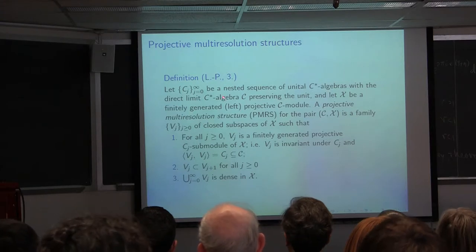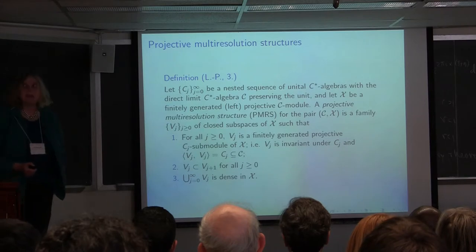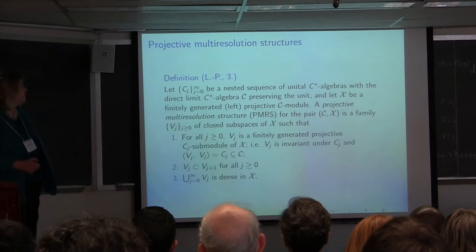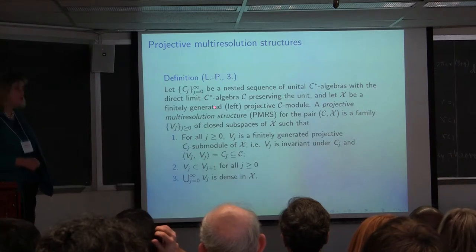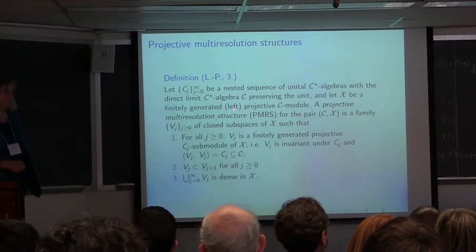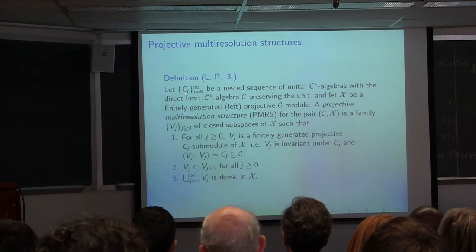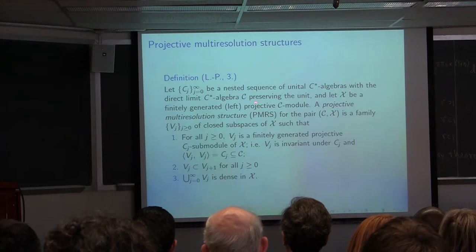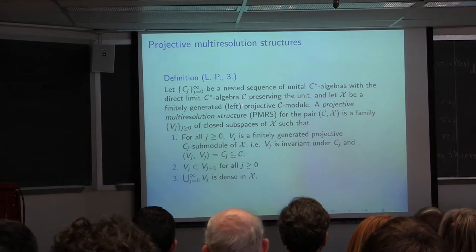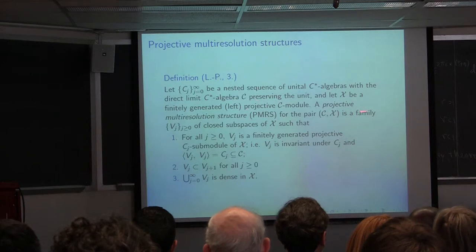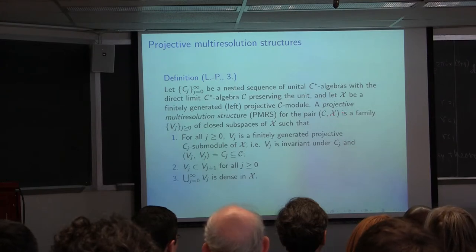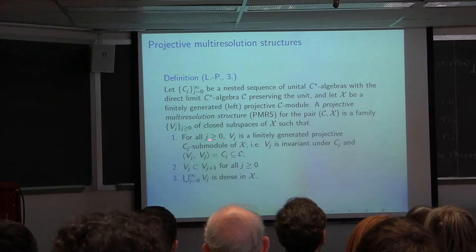With that notion in mind, we ask: is there a way, when we take our non-commutative solenoids, to define some projective module structure on them? Of course there is, and we wanted to use the direct limit because we wanted more generally to have a whole theory for direct limits. Suppose we have a general sequence of unital C*-algebras with direct limit C (also unital), and a finitely generated projective left C-module X. We say we have a projective multi-resolution structure for the pair (C, X) if we have a family of closed subspaces V_j, j = 0, 1, 2, …